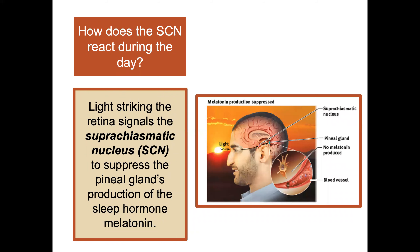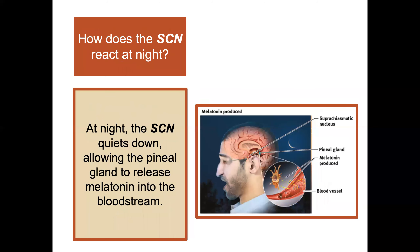How does the SCN react during the day? Light striking the retina signals the SCN to suppress the pineal gland's production of the sleep hormone melatonin. This is why living somewhere with extreme light variation — like near the Arctic Circle — can really affect people's sleep cycles. At night, the SCN quiets down, allowing the pineal gland to release melatonin into the bloodstream.